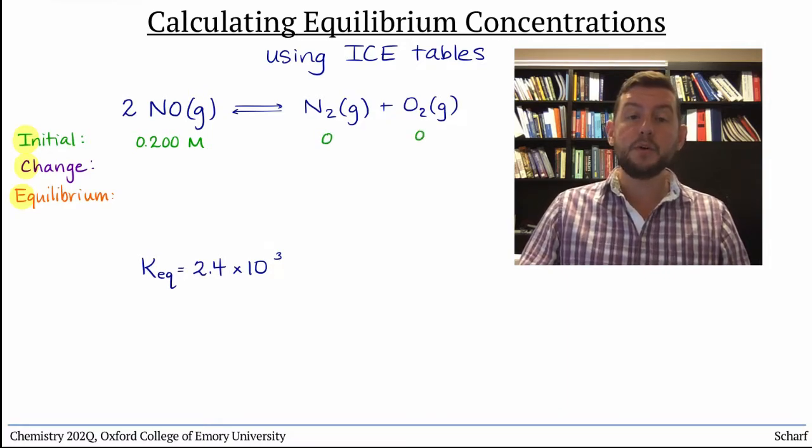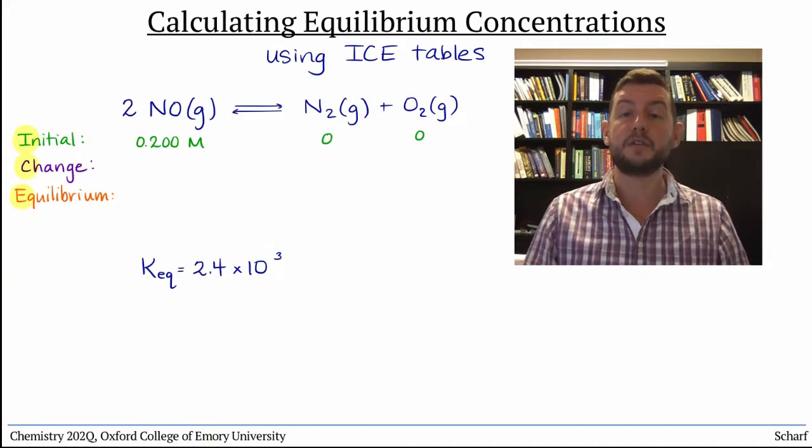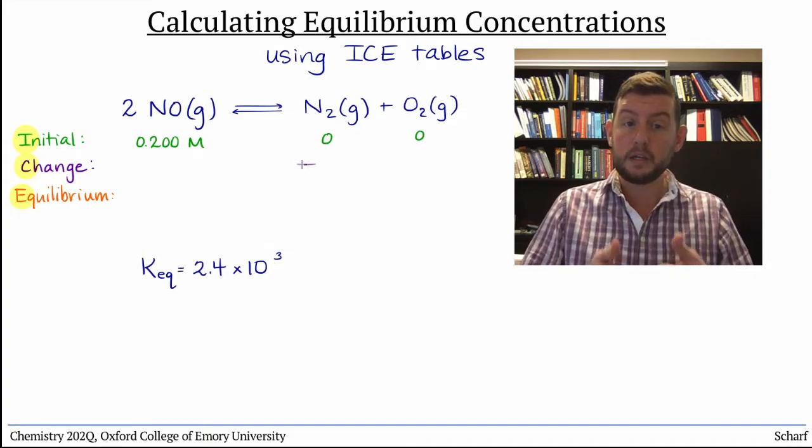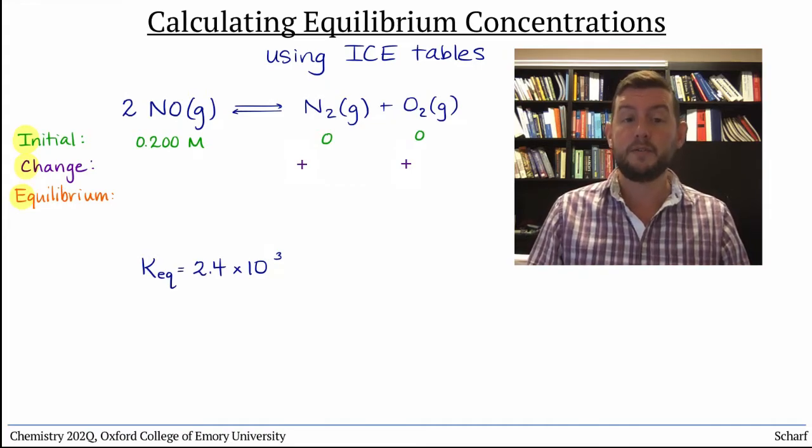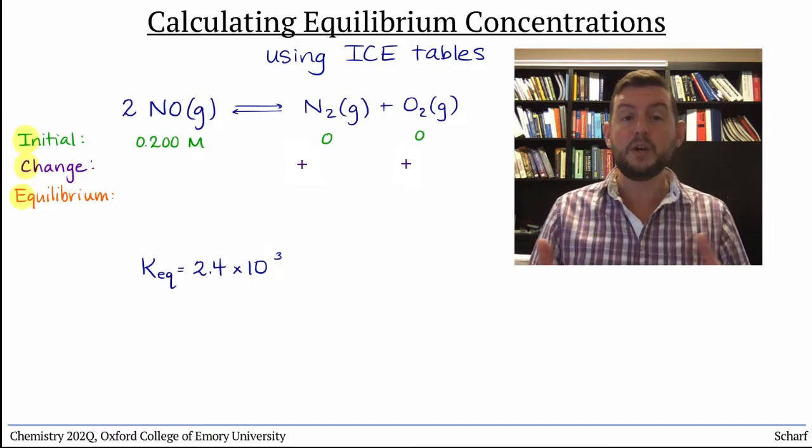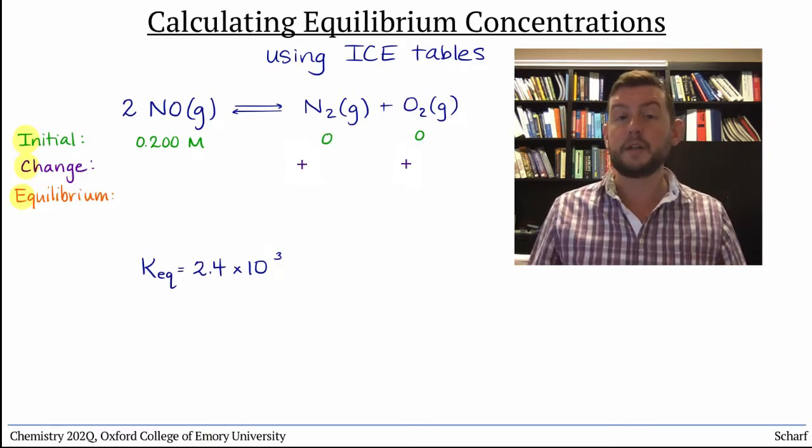As we approach equilibrium, we know that the concentrations of N2 and O2 will increase, and they'll increase by the same amount, since they have the same stoichiometric coefficients. But we don't know this value a priori, so we'll call it x.